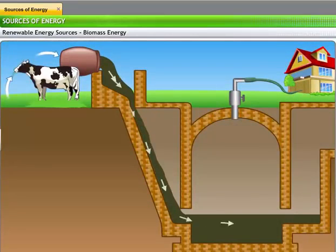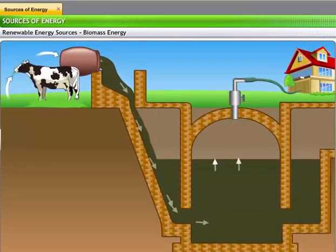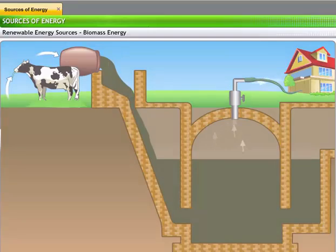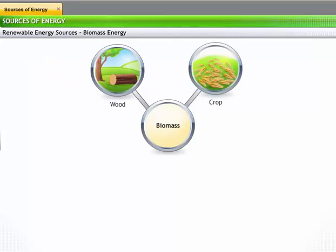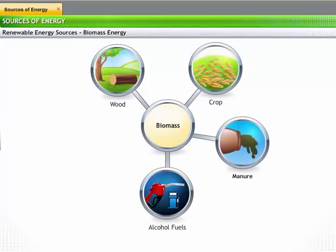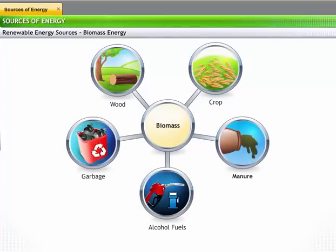Other examples of biomass are wood, crop, manure, alcohol fuels and garbage.